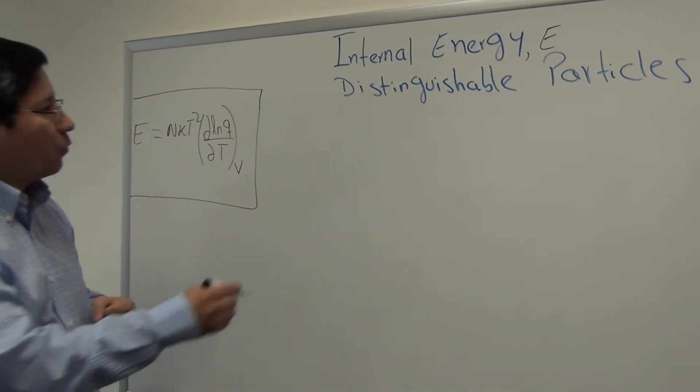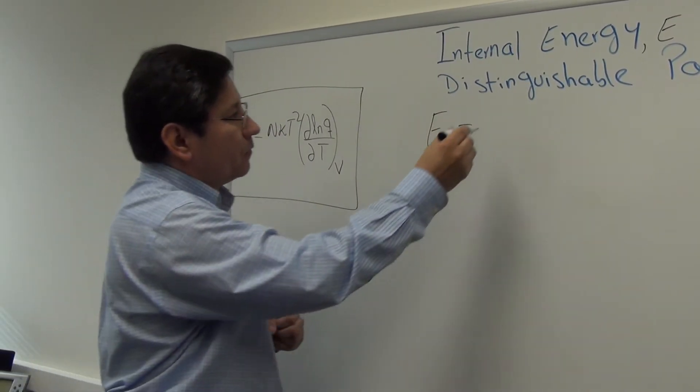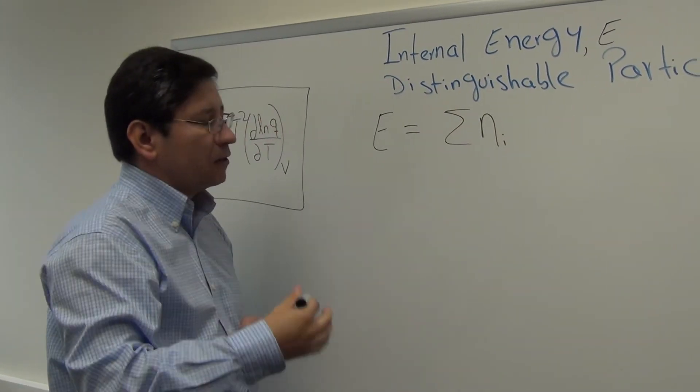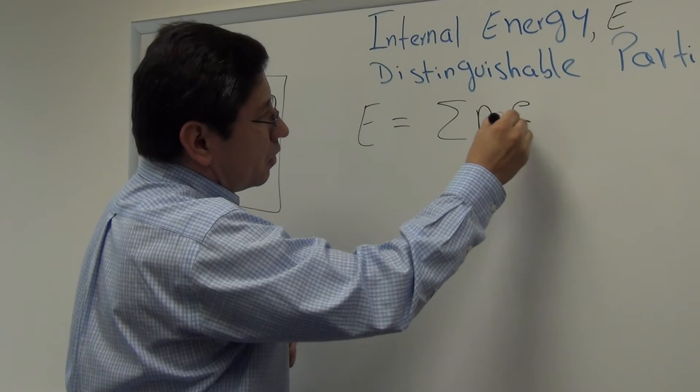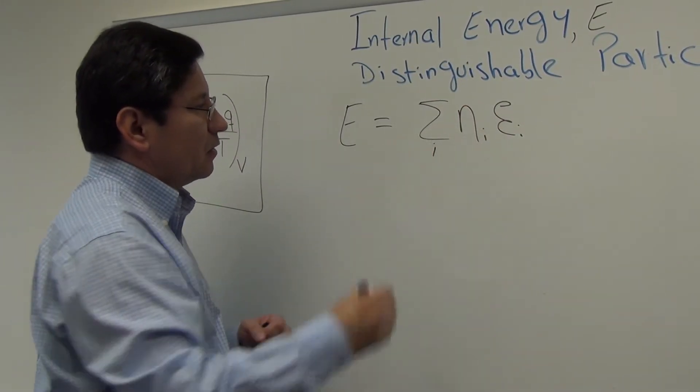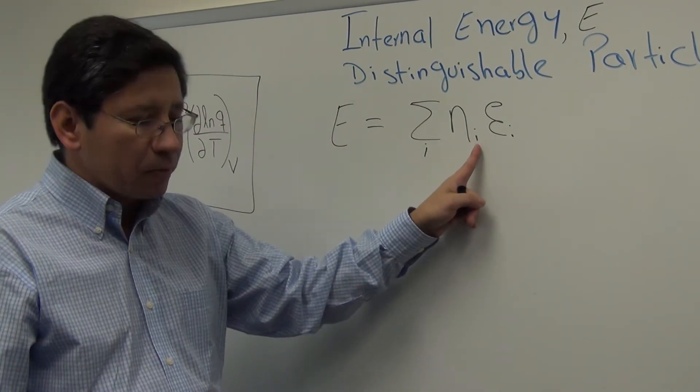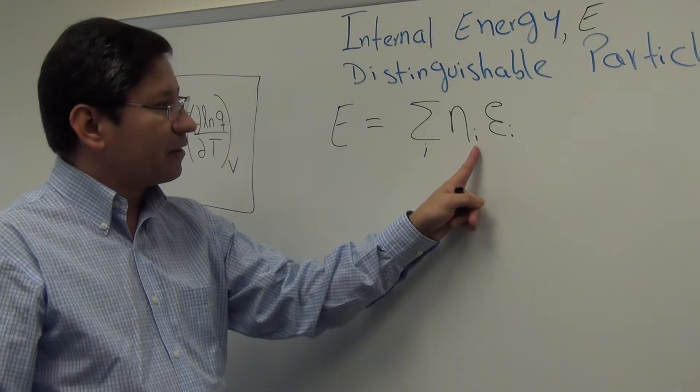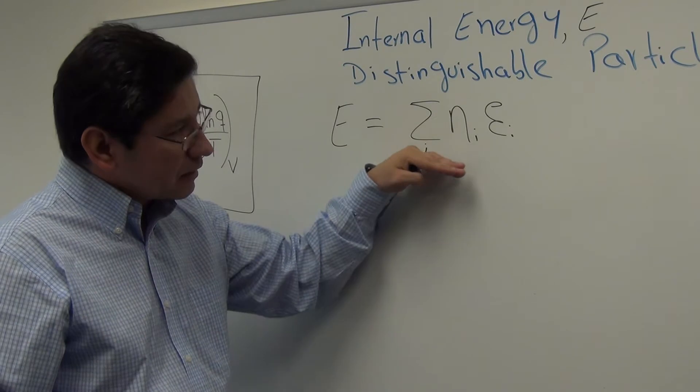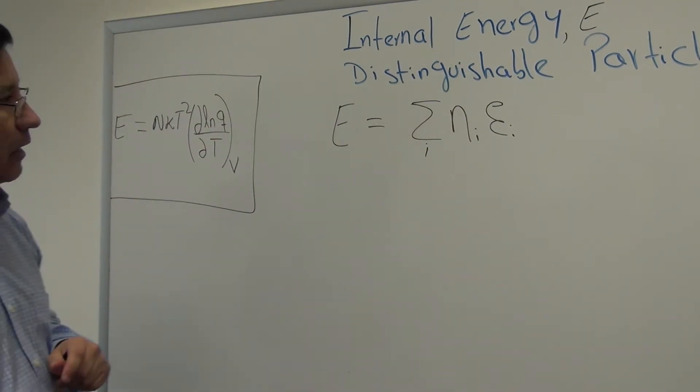What this equation is telling us is that if we have access or knowledge of Q, its functional form, then we should be able to obtain the internal energy of the system based on Q. So let me just make clear that this is going to be symbolized by the letter E. So how do we get there? Well, let's start with the definition of E in terms of the particles.